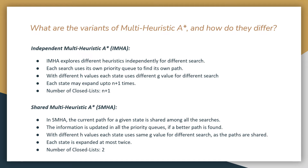In SMHA star, the current path for a given state is shared among all the searches, which means if a better path to a state is discovered by any of the searches, the information is updated in all the priority queues. Therefore, a single G value is used for each state. The number of closed lists in SMHA star are two: one for the anchor search (consistent heuristic) and one for inadmissible searches.